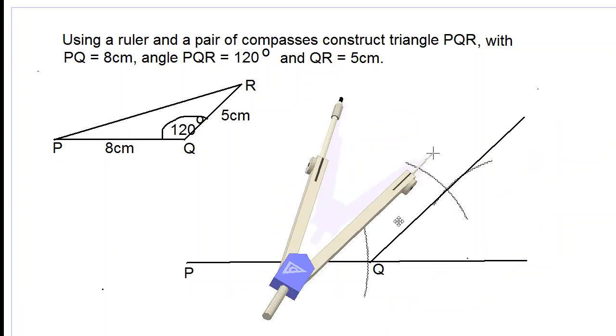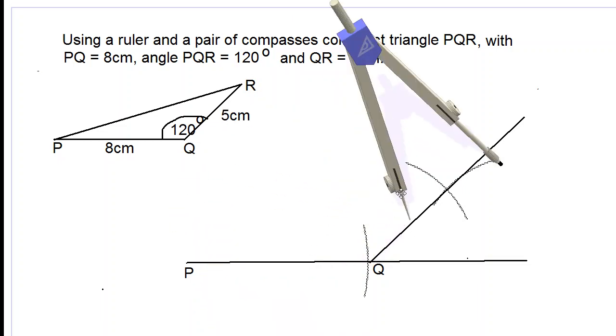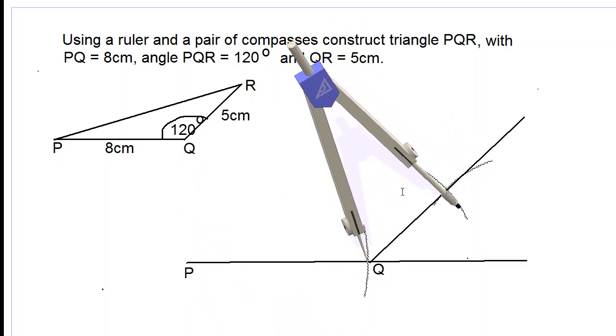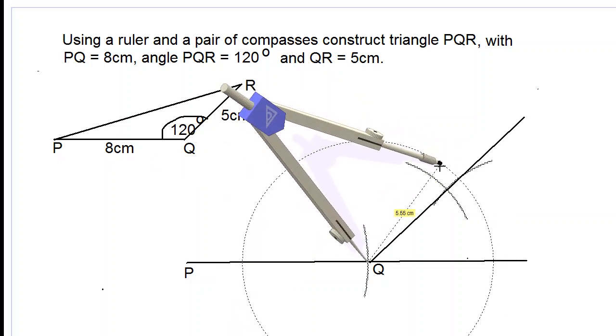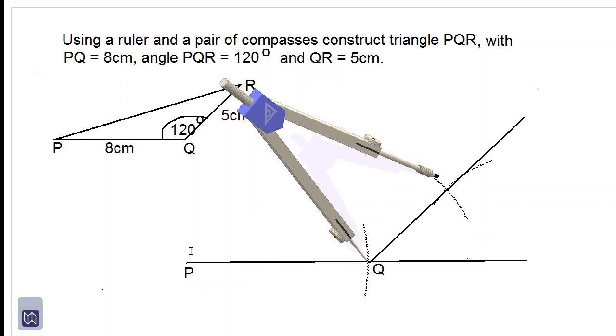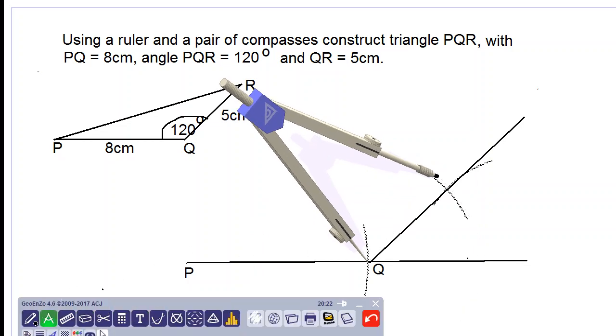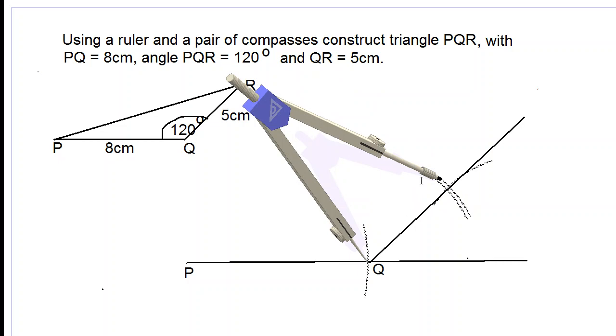Let's take out our compass now. Placing the compass at point Q, stretch out the compass until we get a distance of five centimeters. Once we get this distance of five centimeters, we use our lighter pencil to make our arc length and this will be our point R.